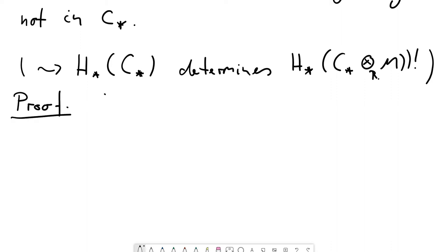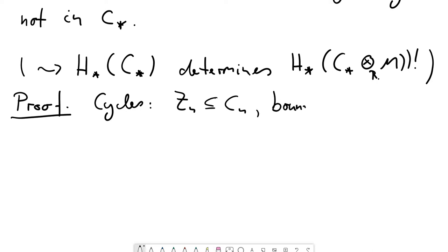Let's enter the proof. We start by recalling notation. We denote the cycles — the kernels of the differentials in the chain complex C_n — by Z_n: this is a submodule of C_n, just the kernel of the nth differential. Similarly, the boundaries are the images of the differentials, denoted B_n: B_n is the image of the (n+1)st differential, and hence also a submodule of C_n.